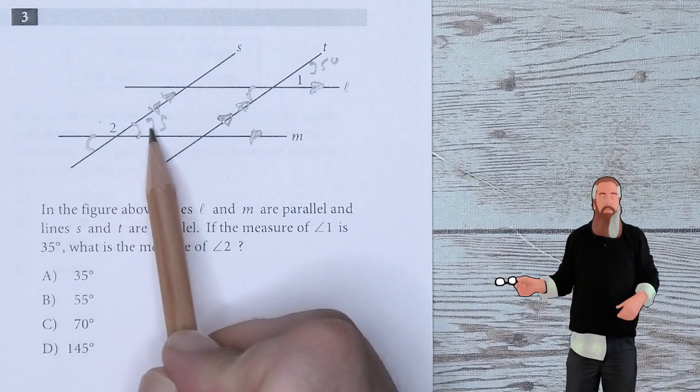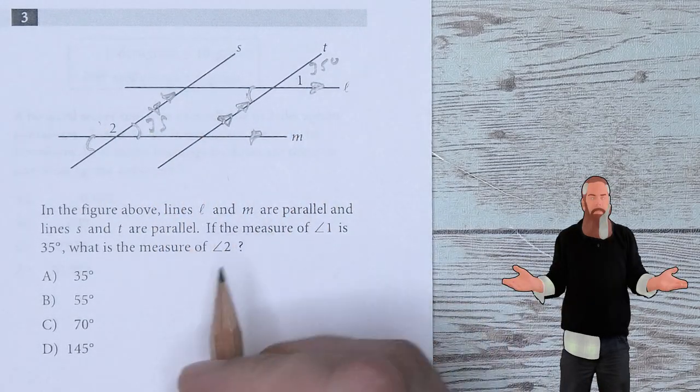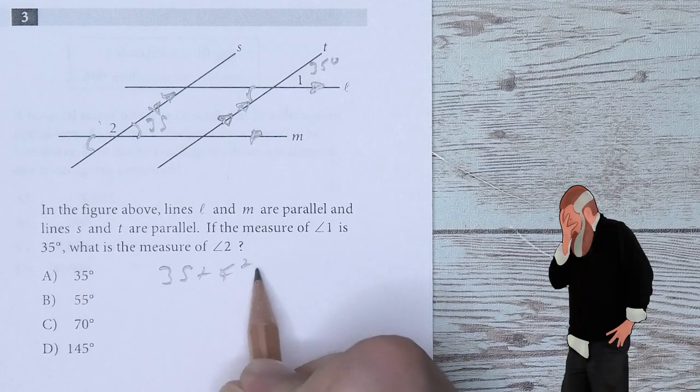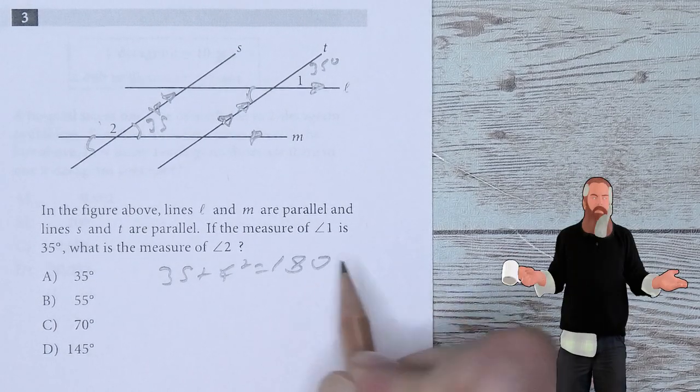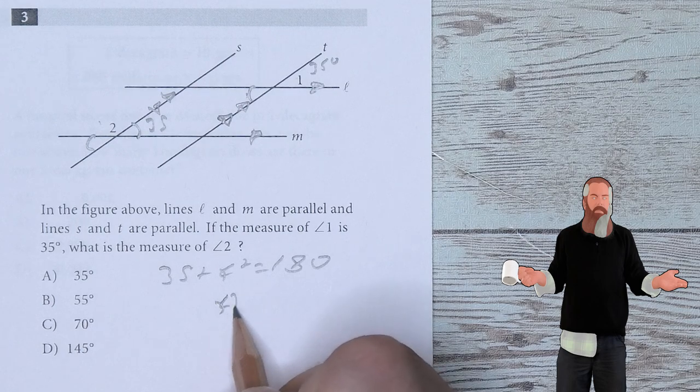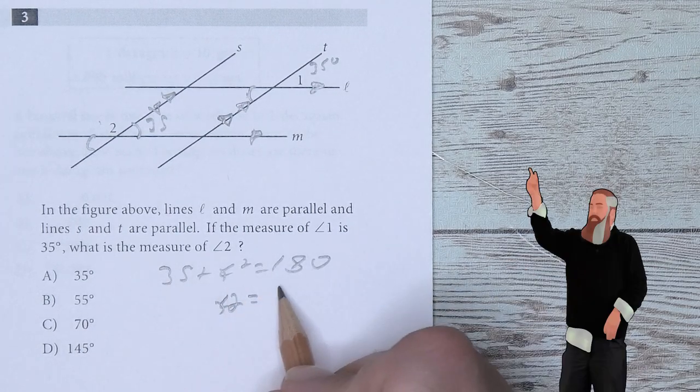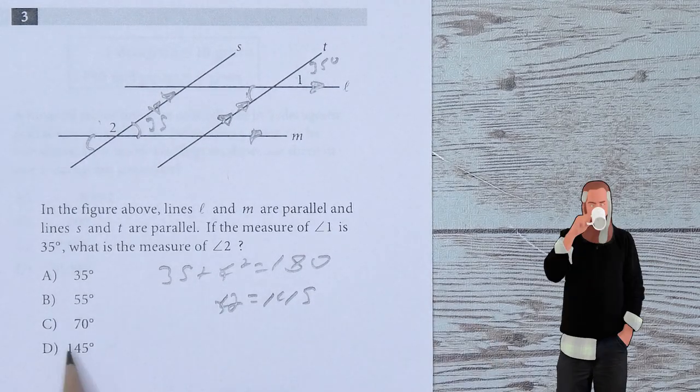It's also the angle directly across from it, and also the angle directly across from it, meaning this one is 35 degrees. Knowing that angle one plus angle two is equal to 180, I can say 35 degrees plus angle two would be equal to 180. So angle two would be equal to 180 minus 35, which is 145. D is the answer.